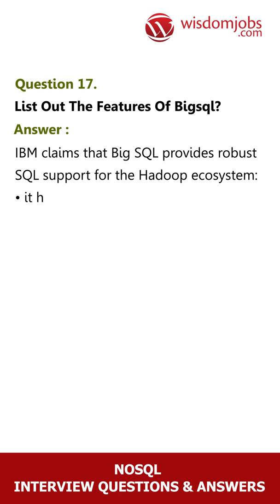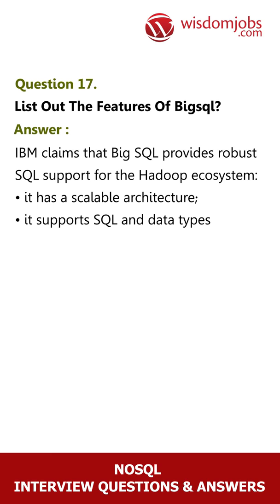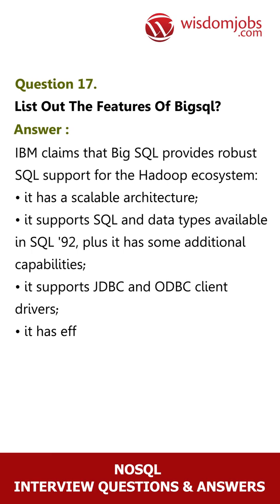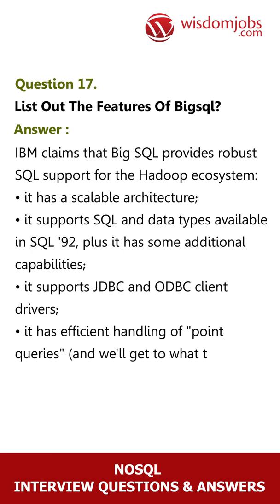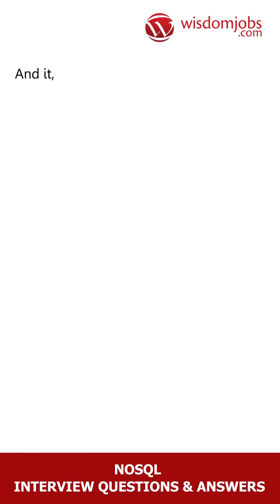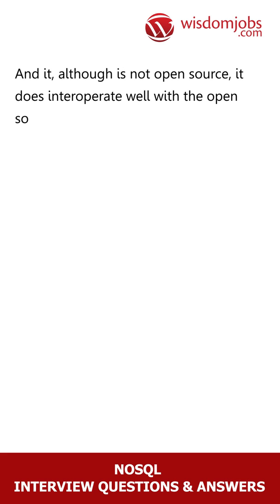Question 17: List out the features of Big SQL. Answer: IBM claims that Big SQL provides robust SQL support for the Hadoop ecosystem. It has a scalable architecture, supports SQL and data types available in SQL 92, plus additional capabilities. It supports JDBC and ODBC client drivers, has efficient handling of point queries, supports a wide variety of data sources and file formats for HDFS and HBase, and although it is not open source, it interoperates well with the open source ecosystem within Hadoop.